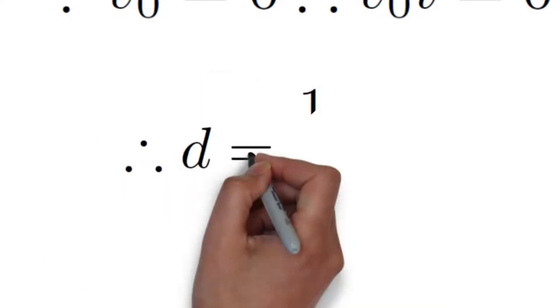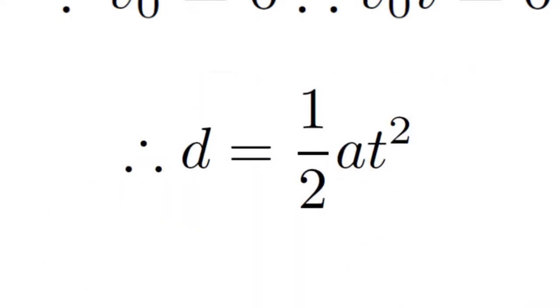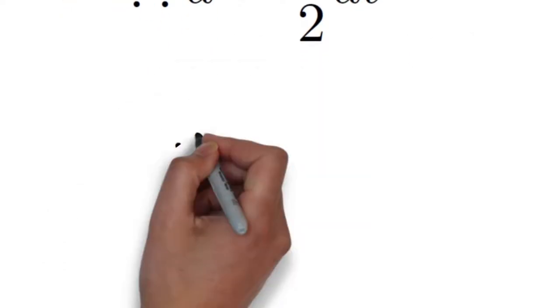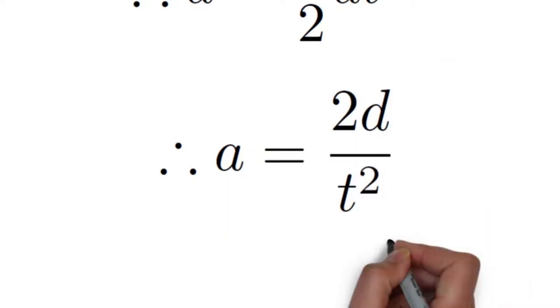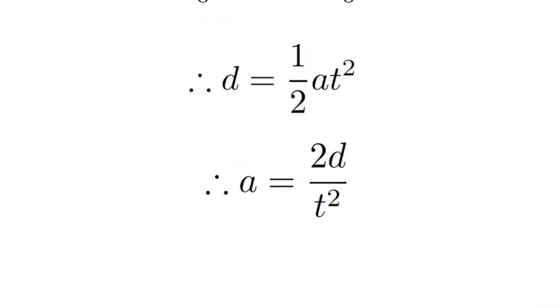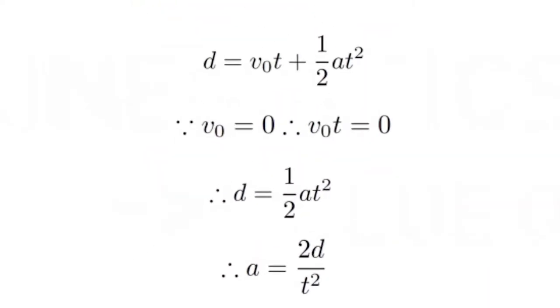Therefore, if we can measure how long it takes an object to drop and the height from which it was dropped, we can rearrange the equation and solve for acceleration, which will be equivalent to g because the object is in freefall.